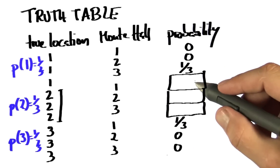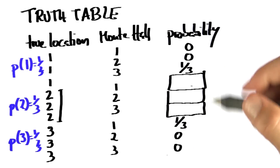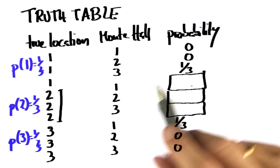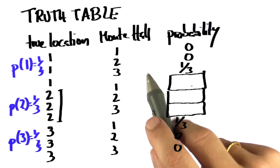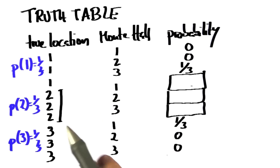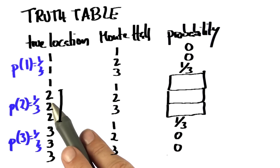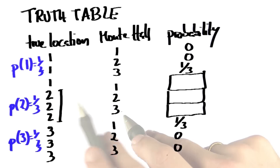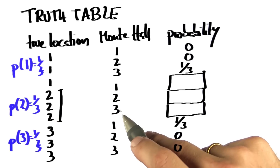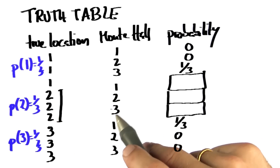Now comes the tricky part, and I want you to answer it for me. What is the probability — the joint probability — that the true location is 2, and Monty chooses to show me 1?